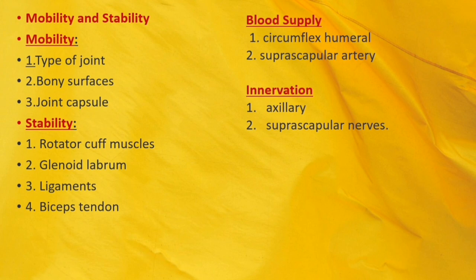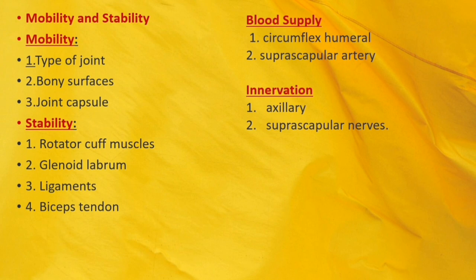Mobility and stability: the shoulder joint is one of the most mobile in the body, at the expense of stability. Factors for mobility include: ball-and-socket joint type; shallow glenoid cavity and large humeral head (a 1:4 disproportion, analogous to a golf ball and tee); and a lax joint capsule. Factors for stability include: rotator cuff muscles surrounding the joint, compressing the humeral head into the glenoid cavity; the glenoid labrum deepening the cavity and creating a seal to reduce dislocation risk; ligaments reinforcing the capsule and forming the coracoacromial arch; and the biceps tendon acting as a minor humeral head depressor.